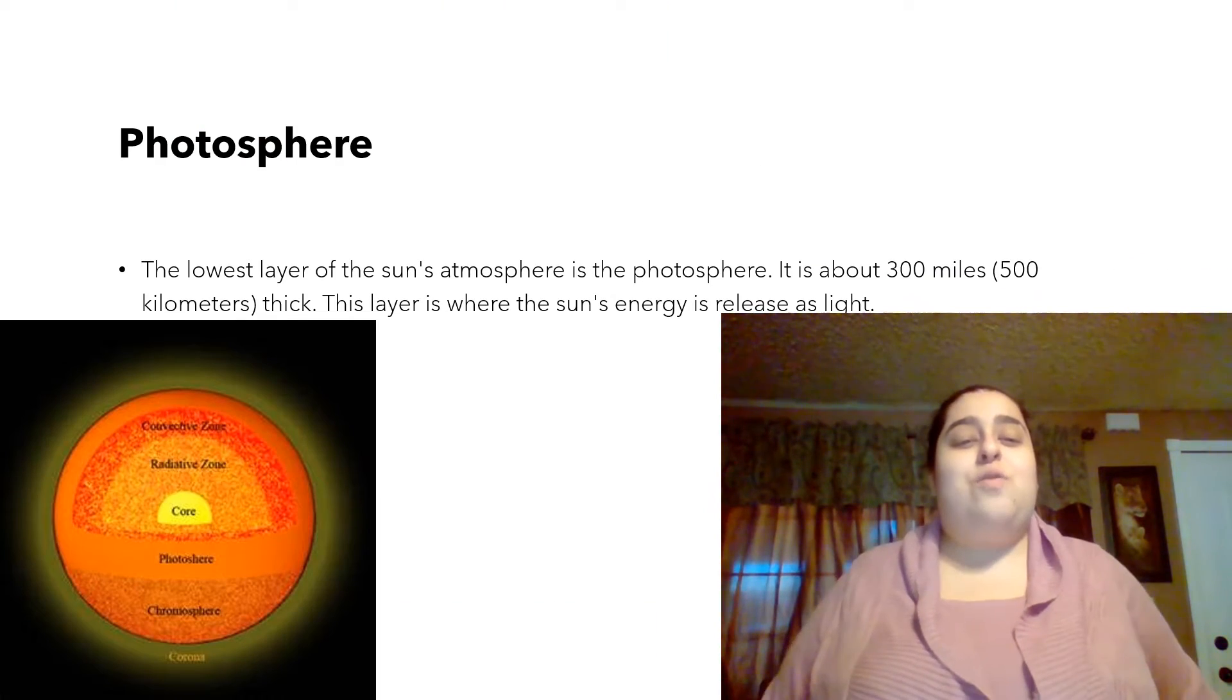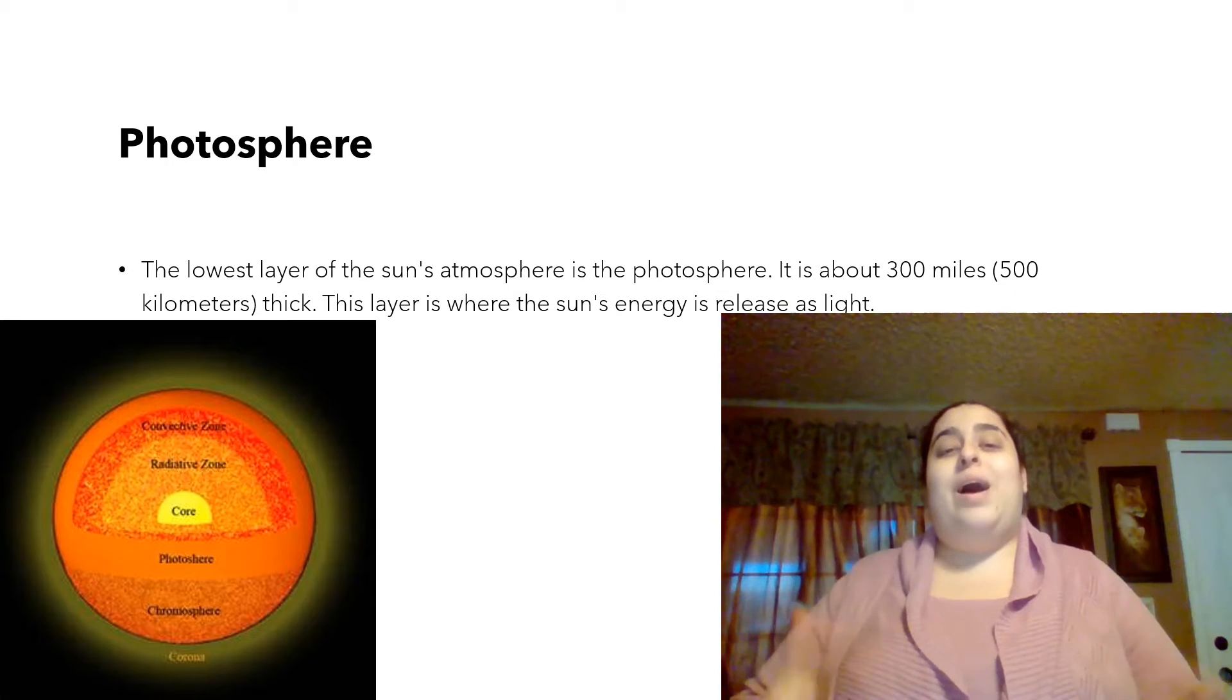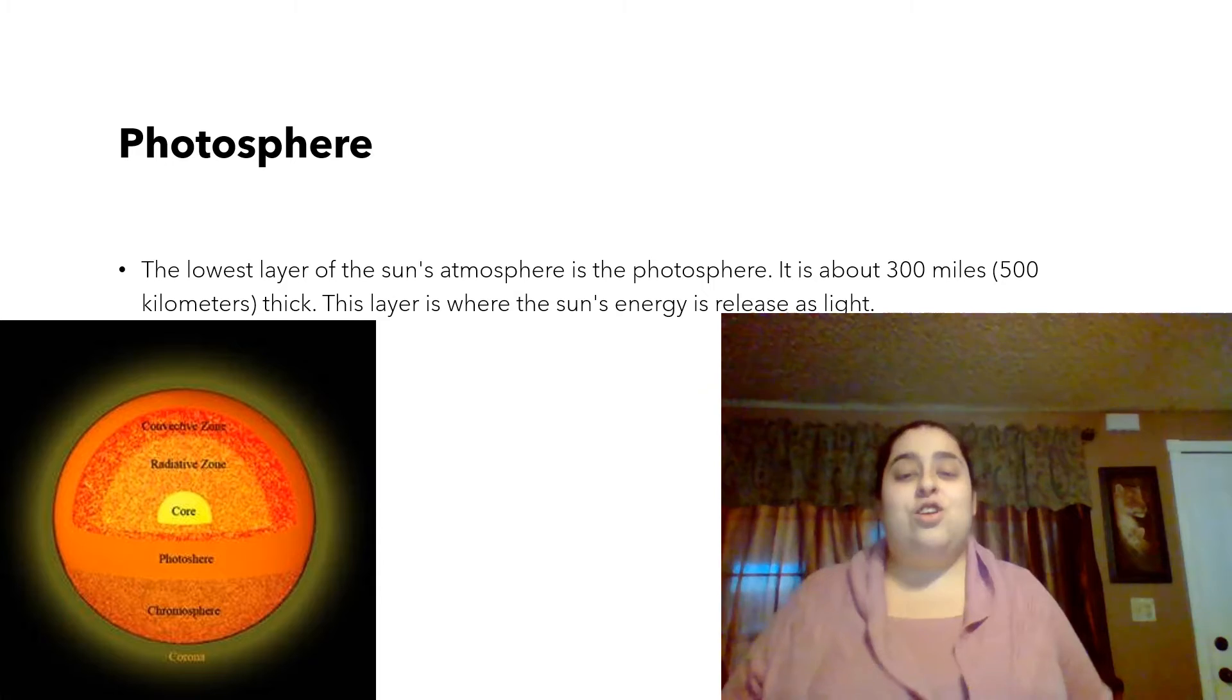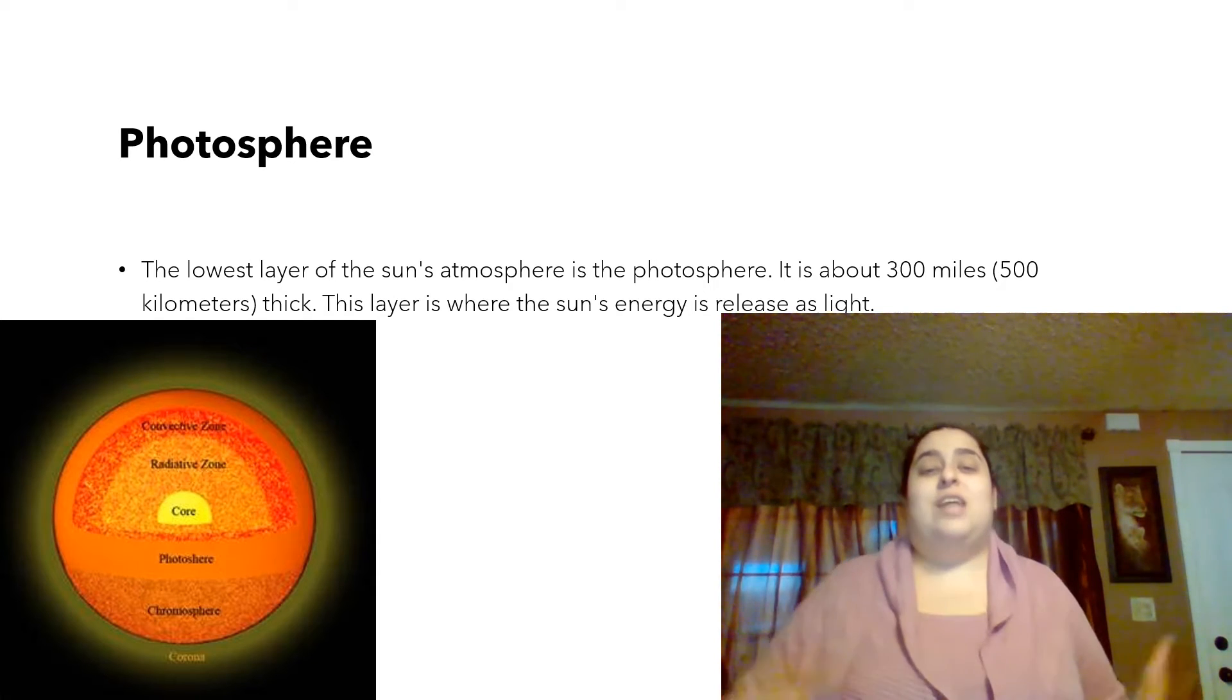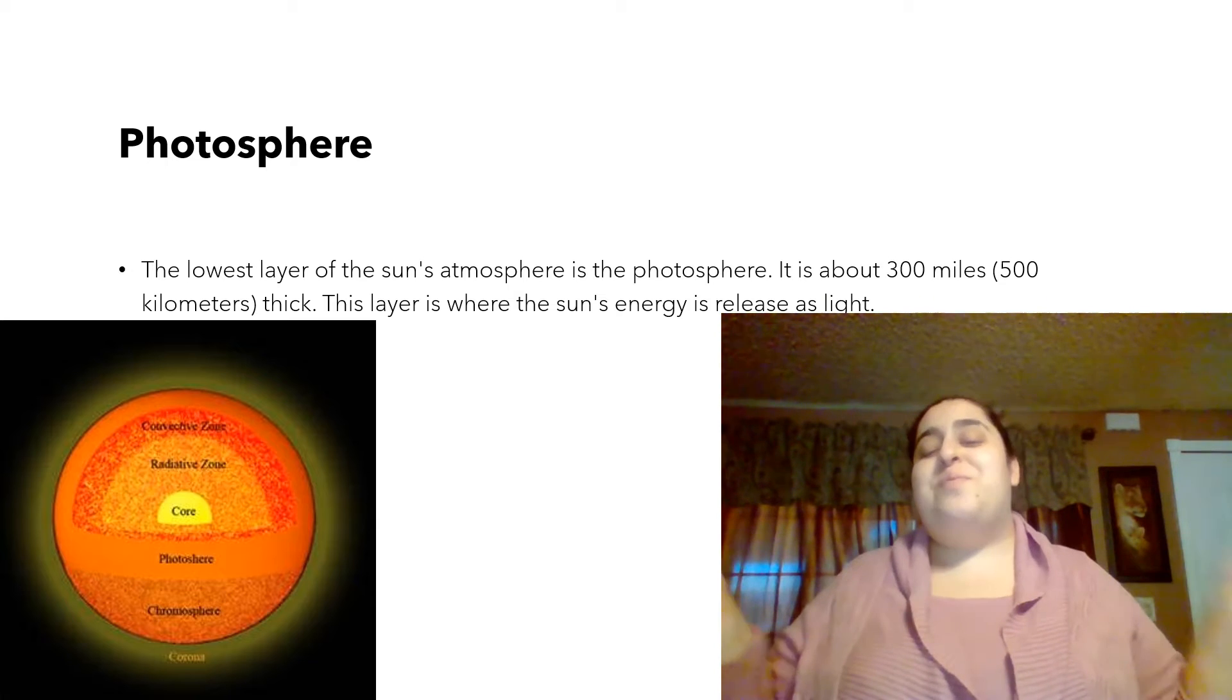So, the first one is our photosphere. This is the lowest layer of the sun's atmosphere. It is about 300 miles thick. This layer is where the sun's energy is released as light. So because of this layer, we get light from the sun.